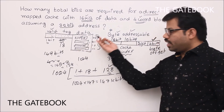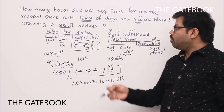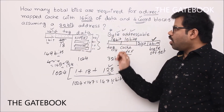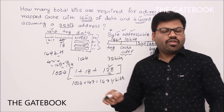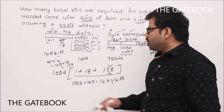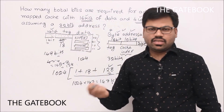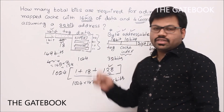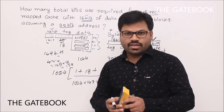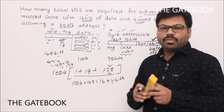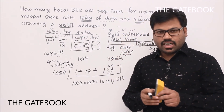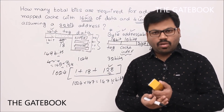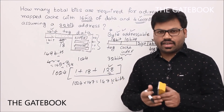To summarize: if the problem is about a byte addressable system, include byte offset bits in your address division. If it's word addressable, you don't need byte offset bits. That's the key difference. We'll see some more direct mapping technique problems to understand things clearly.